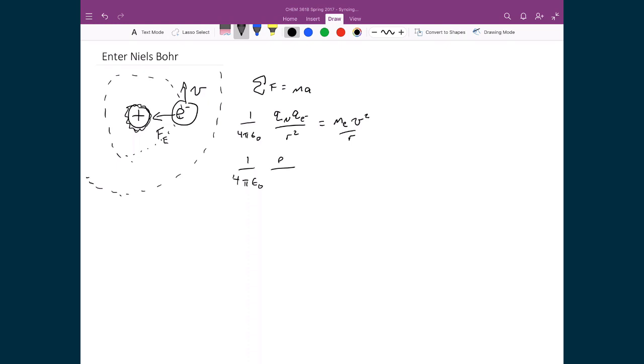So I'm writing 1 over 4 pi epsilon naught. On the other half of this equation, I'm just going to have e squared over r squared. And again, the e squared in this case is just 1.602 times 10 to the minus 19 coulombs, because again, it's the same charge on both the nucleus and the electron. Of course, one is negative and the other one's positive, but in this case we're only figuring out what the magnitude of this force is, so the fact that one is negative and one is positive is not relevant.